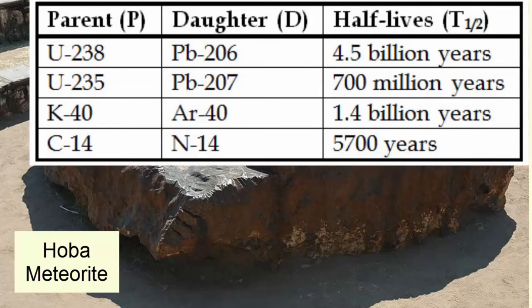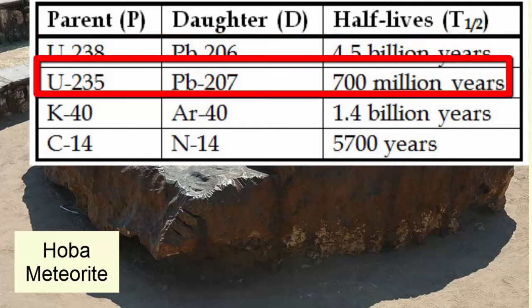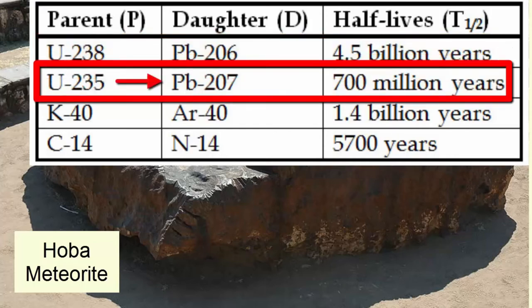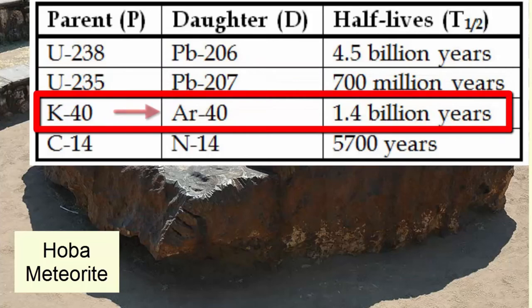Fortunately, there are a number of other pairs, such as Uranium-238, which decays to Lead-206 and has a half-life of 4.5 billion years; Uranium-235, which decays to Lead-207 and has a half-life of 700 million years; and Potassium-40, which decays to Argon-40 and has a half-life of 1.4 billion years.